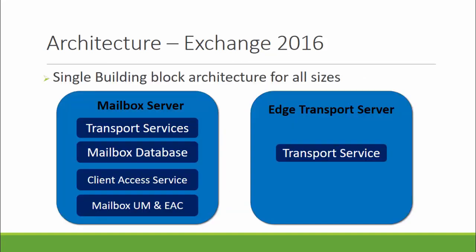Here you can see a single block architecture with all services — transport services, mailbox services, and client access services — in one server. Those who worked with previous versions of Exchange know that these were allowed to install as separate roles in separate servers. In 2016, it is not allowed to install them as separate roles. So with Exchange 2016, the number of server roles is reduced to two: mailbox server and edge transport server.